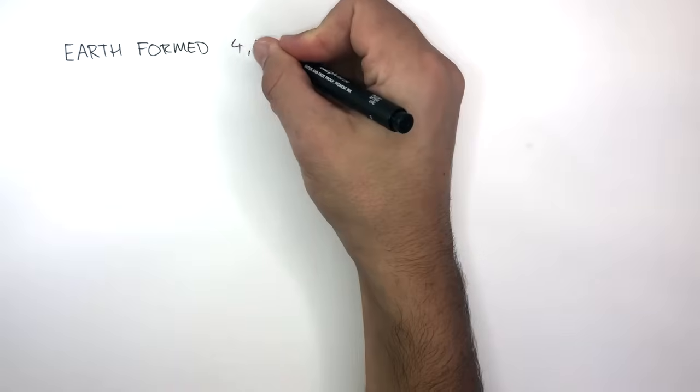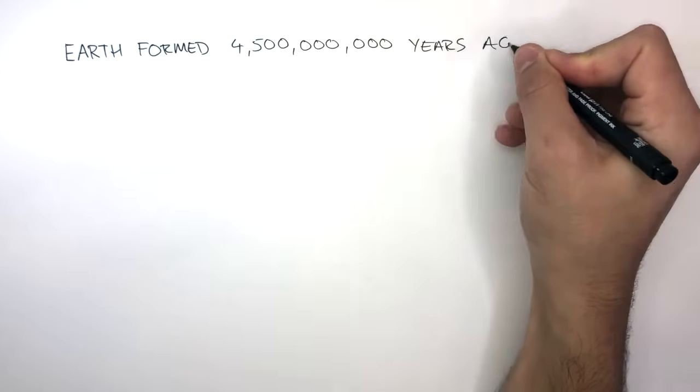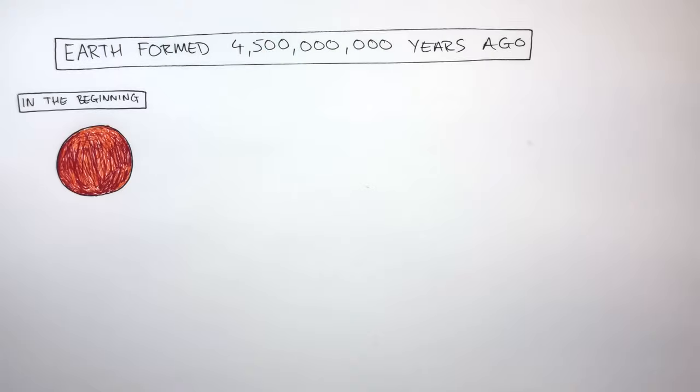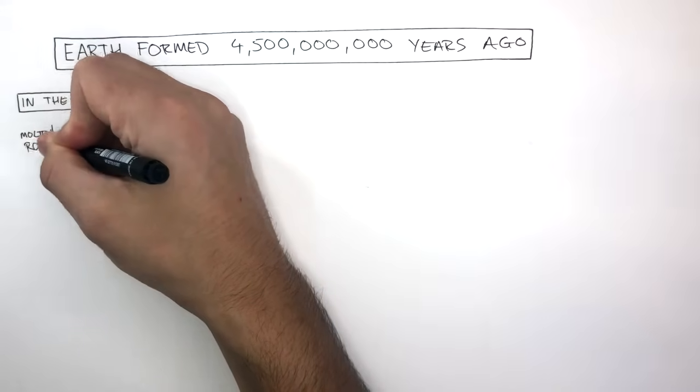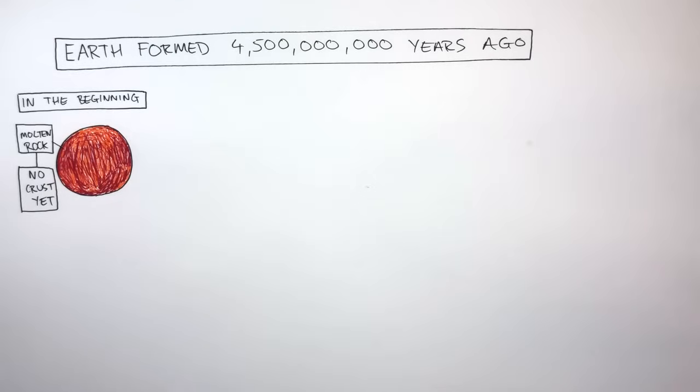Earth formed 4.5 billion years ago. In the beginning, Earth would have been very hot. 4.5 billion years ago, it would have been just molten rock. No crust yet would have formed.